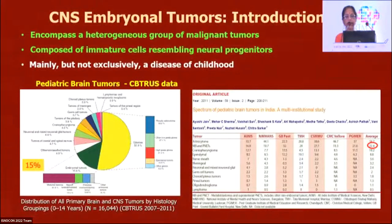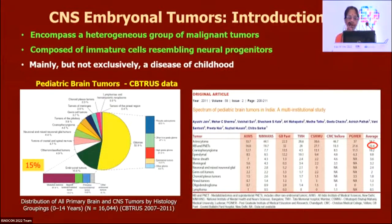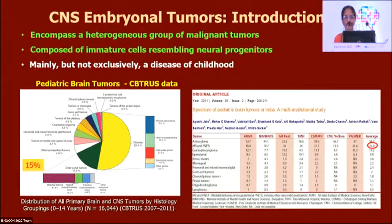Embryonal tumors are a heterogeneous group — all malignant, composed of immature cells resembling neural progenitors, and largely a disease of childhood. As seen in multi-centric CB Trust data — and we discussed the need for more multi-centric Indian data as a vision for ISNO in the next decade — medulloblastomas and other embryonal tumors constitute about 15 to 20 percent of childhood CNS tumors.